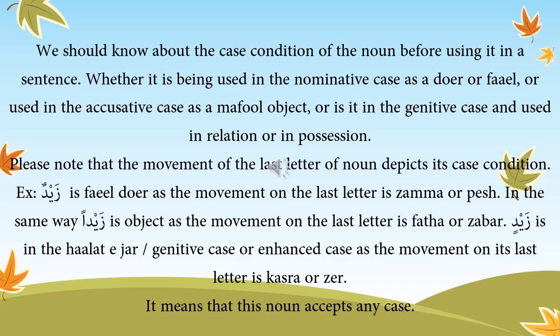The movement of the last letter of the noun depicts its case condition. For example, zaidun is fa'il (doer) as the movement on the last letter is damma (pesh). Zaidan is object as the movement on the last letter is fatha (zhabar). Zaidan is in the halat-e-jar (genitive case) as the movement on its last letter is kasra (zayr).